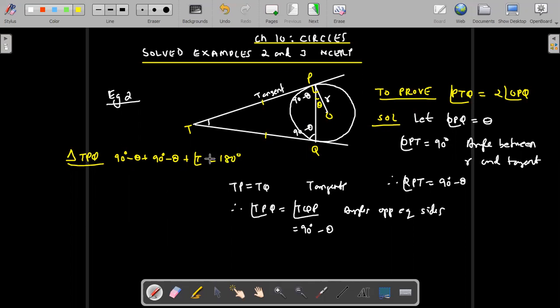So sum of angles is 180. 90 plus 90 is 180 and 180 we can cancel from either side. Minus theta minus theta we can transfer to the other side. So we get theta plus theta that is 2 theta. So what is the conclusion from this? This is theta and this is 2 theta.